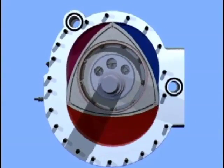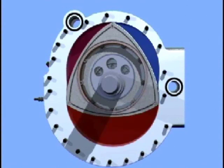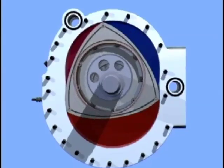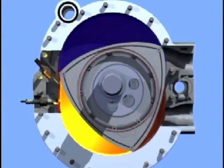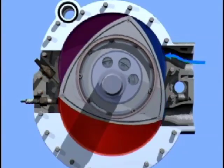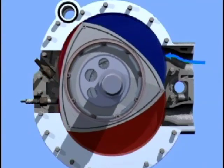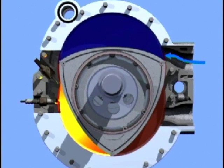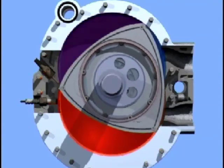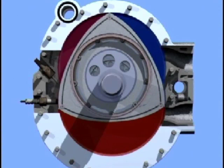The shape of the rotor, together with the shape of the three-sided combustion chamber, creates, in effect, three combustion chambers. These function the same as those in a four-stroke piston engine. To name the four strokes: first, the intake stroke, where the intake air is allowed into the combustion chamber through the intake port. Secondly, the compression stroke, where the intake air is compressed by the changing volume of the chamber.